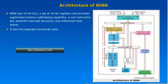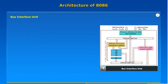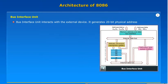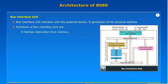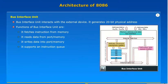Bus Interface Unit. The Bus Interface Unit interacts with external devices. It generates a 20-bit physical address. The functions of the Bus Interface Unit are: it fetches instructions from memory, it reads data from port or memory, it writes data into port or memory, and it supports an instruction queue.